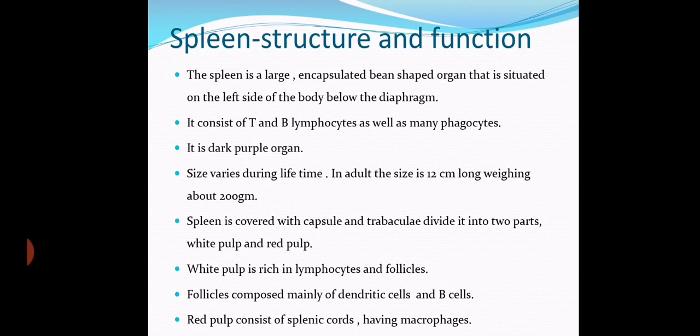The white pulp is rich in lymphocytes and follicles. These follicles are mainly composed of dendritic cells and B lymphocytic cells. The red pulp consists of splenic cords containing macrophages. Macrophages are antigen-processing and antigen-presenting cells, mainly involved in and enhancing phagocytosis.